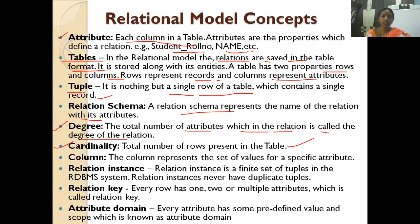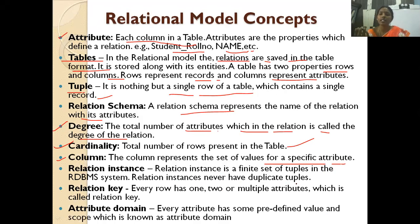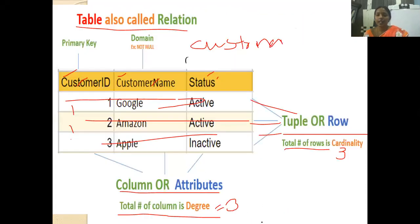Next is column. A column represents a set of values for a specific attribute. Then we have relational instance — a finite set of tuples in the RDBMS system. A relational instance never has duplicate tuples. An instance refers to how much data is present in the database at a certain point in time. In our table with three records, the relational instance is 3.